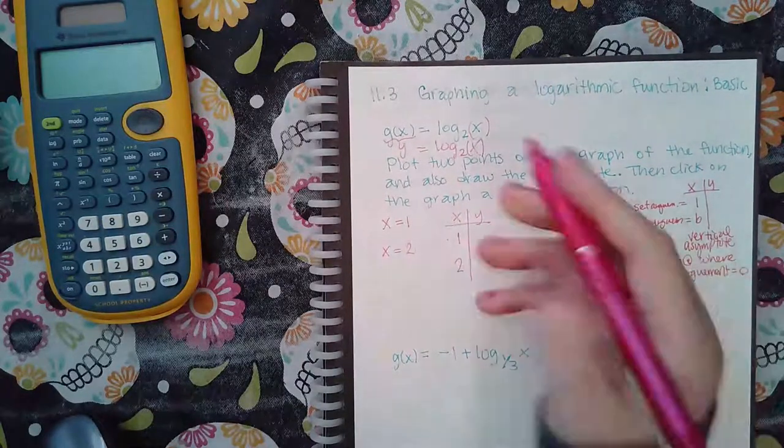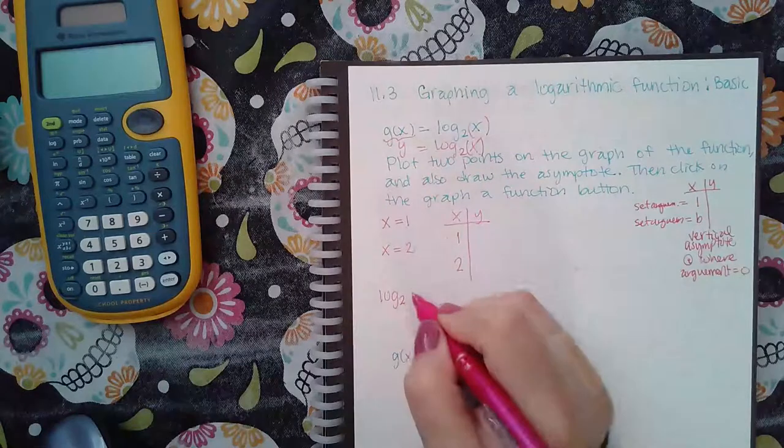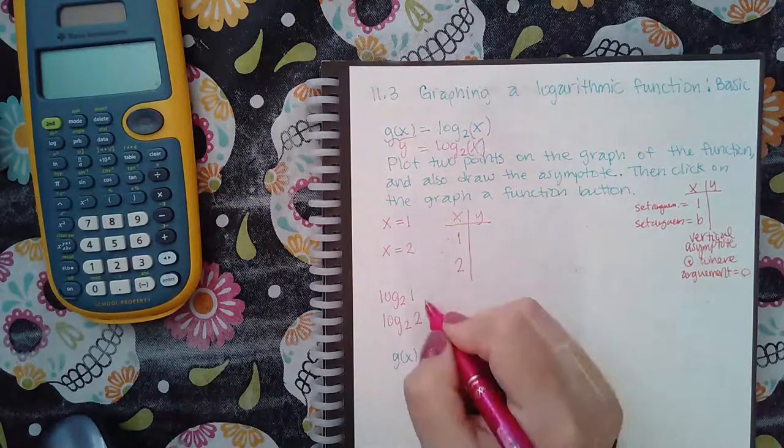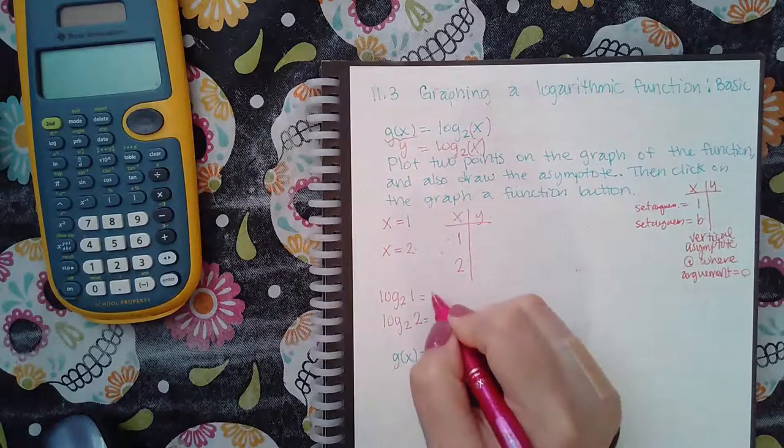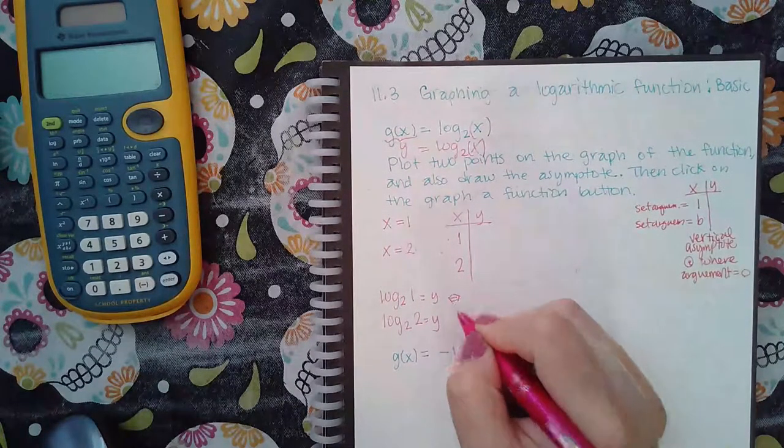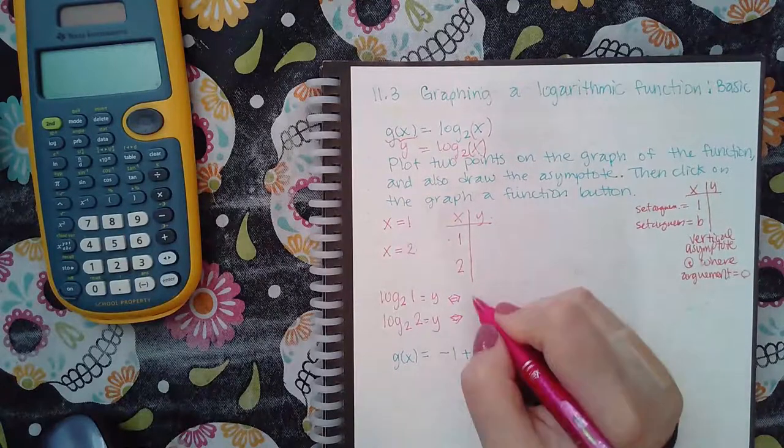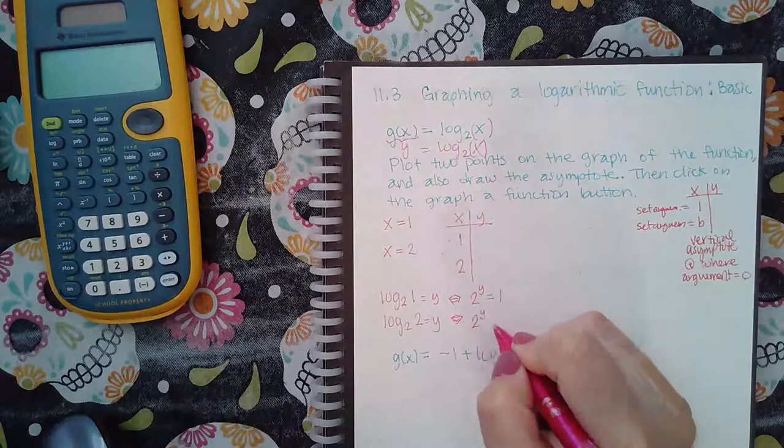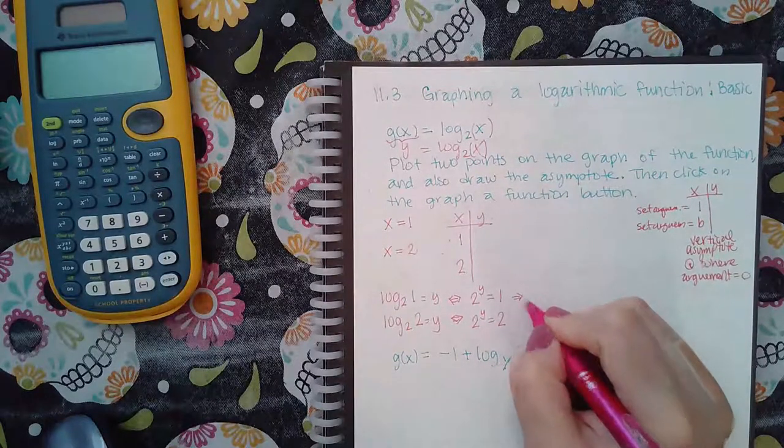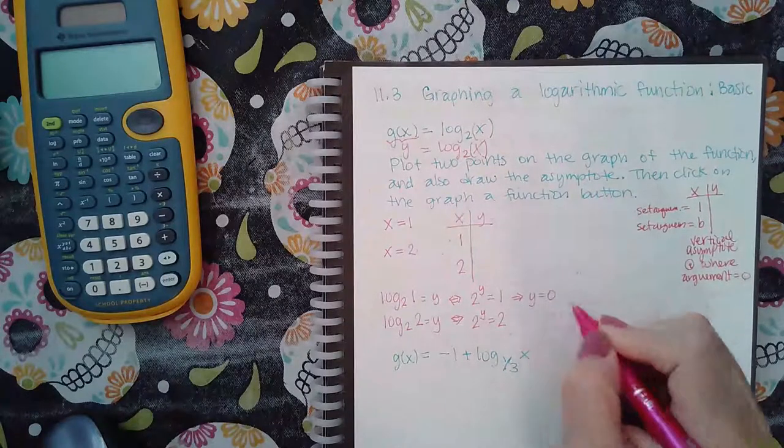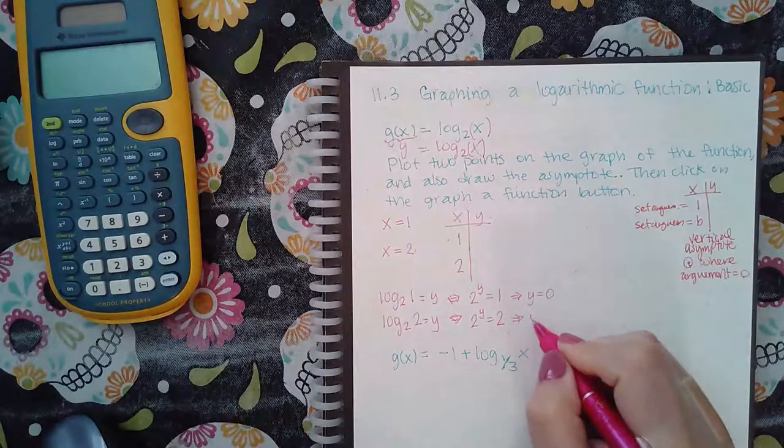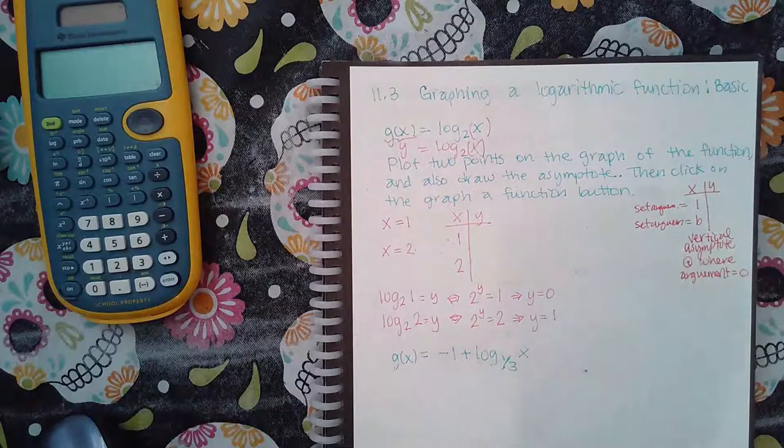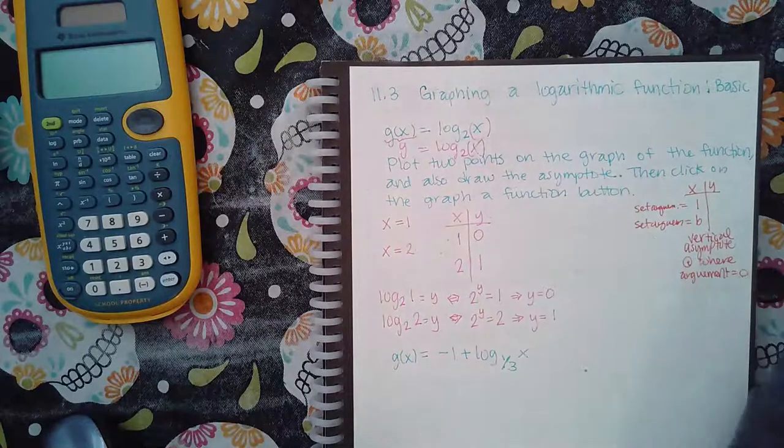Now if I plug in one and two, I get log base two of one, and I get log base two of two. Now we already know we need to figure out that y value. So if I switch the forms over, this is two raised to what exponent equals one, and two raised to what exponent equals two? Well, I know here that any base raised to the zero power will give me one, and any base raised to the one power will keep the base the same. So then I know that the y value here is zero, and the y value here is one.